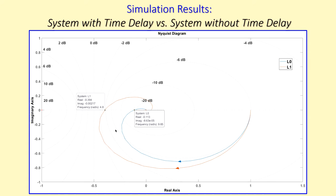This is our second example using a second-order system with a time delay. We have determined step by step the maximum allowed controller gain K and seen what happens when time delay is added. Importantly, a pure second-order system will never be unstable, but adding a time delay can make it unstable.